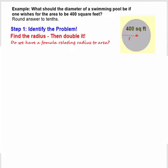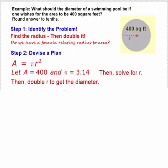And we have such a formula. In step 2, we write down our formula, or gather all the formulas we need, and then devise a plan for finding the value we need. We have a formula: A = πr².